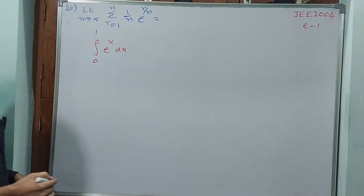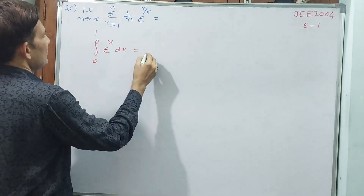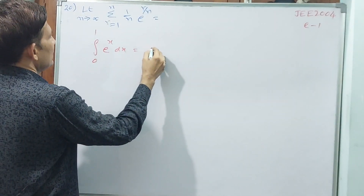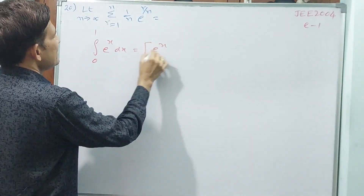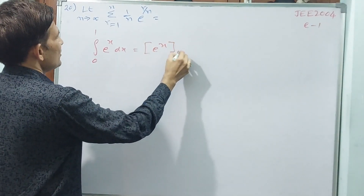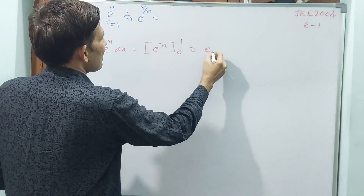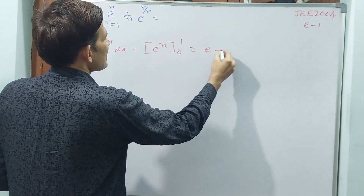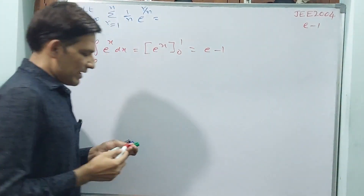e power x dx — that is equal to e power x dx, that is equal to e power 1, which is e, minus e power 0, which is 1. So the answer is e minus 1.